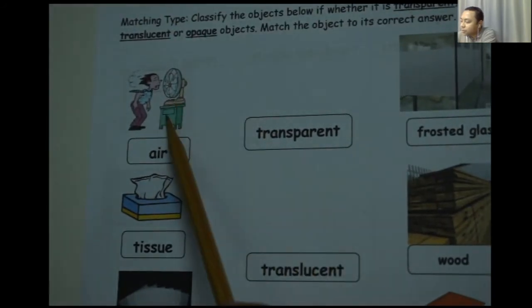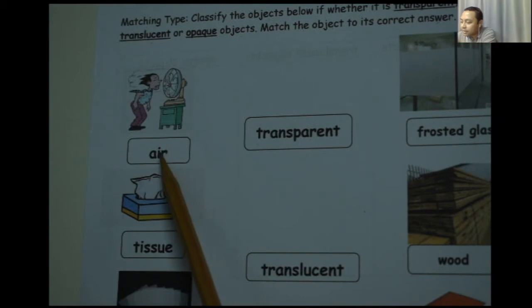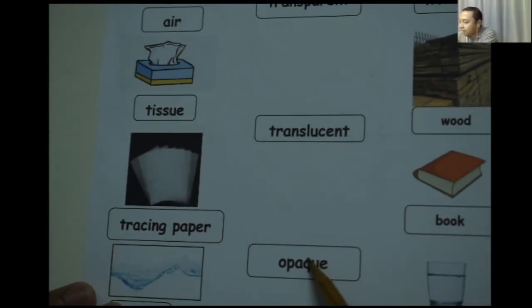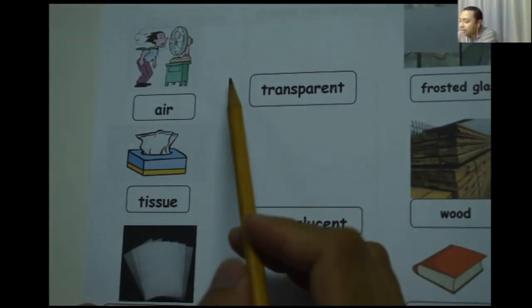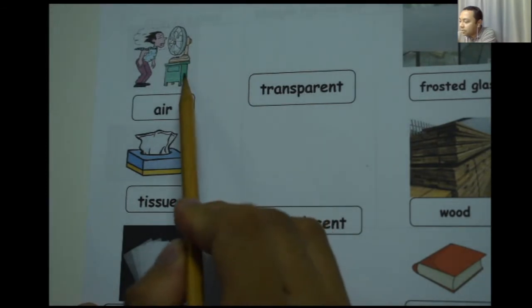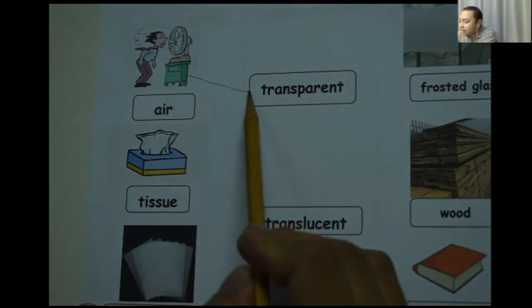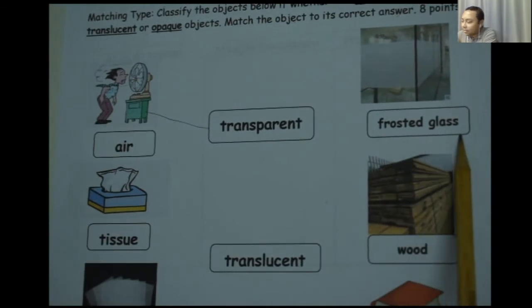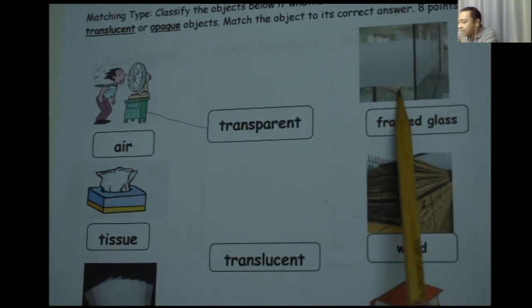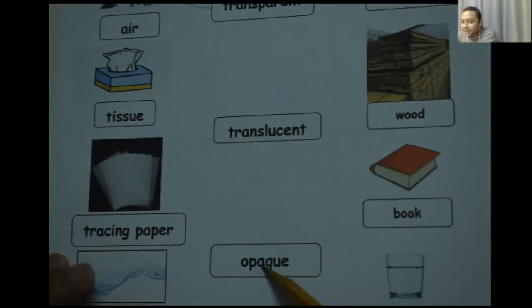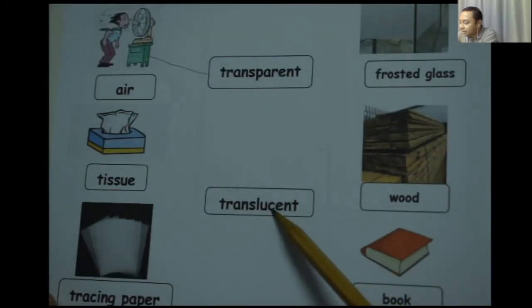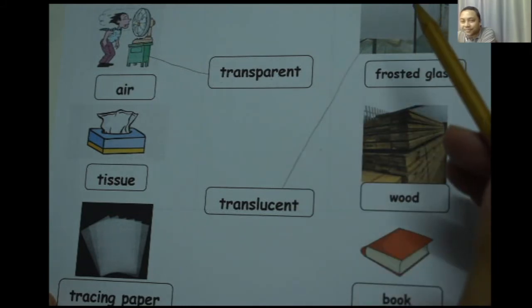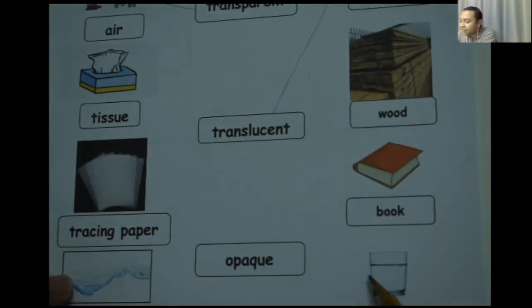For example, this one here — what is it? It's air. Air — is it transparent, translucent, or opaque? The answer is it's transparent. So you draw a line and match the answer to the correct object or picture. The next one: frosted glass — is it transparent, translucent, or opaque? It's translucent. You match the picture to the right column.